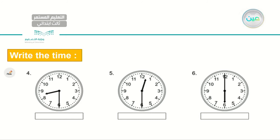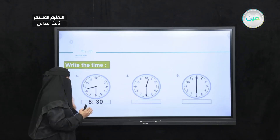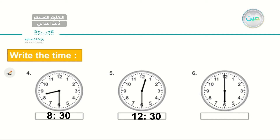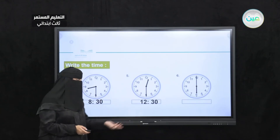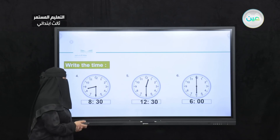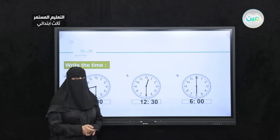Number 4 — what time is it? I will give you 15 seconds. Write down the answers in your notebook. The answer is 8:30. We might say 8:30 or half past 8. Next one: 12:30, or half past 12. And for the last one: it is 6 o'clock. Let's read our answers: 8:30, 12:30, 6 o'clock.